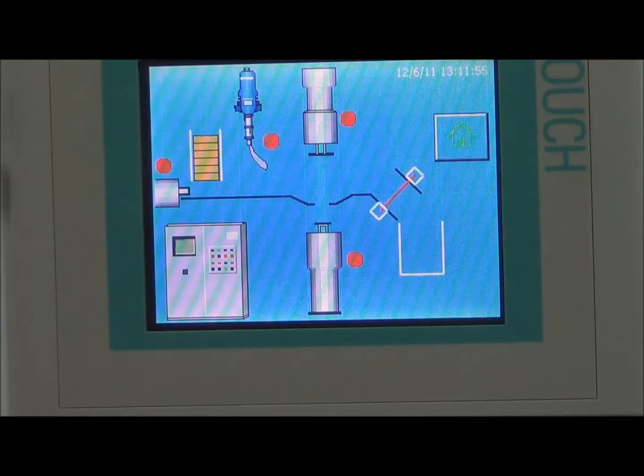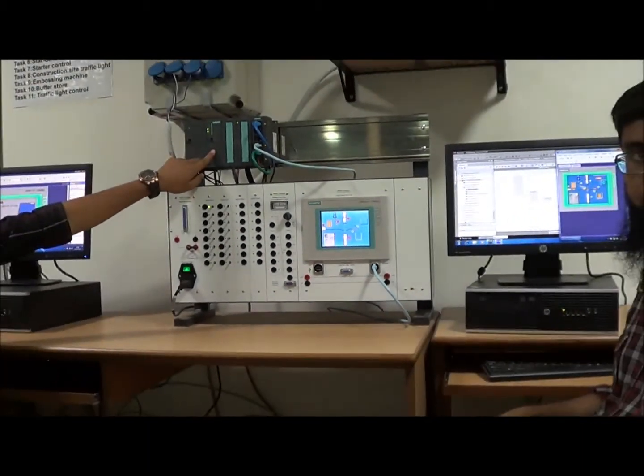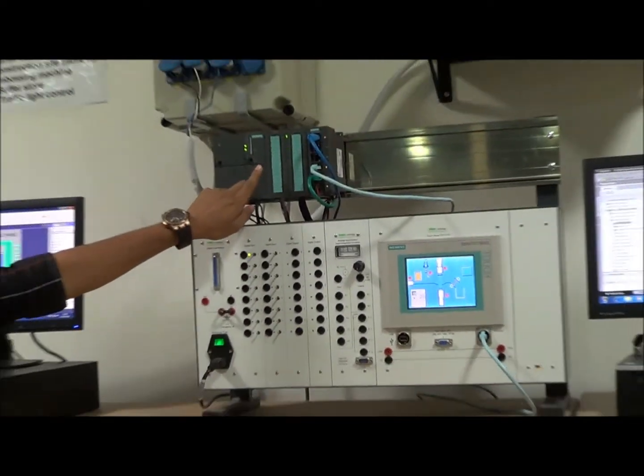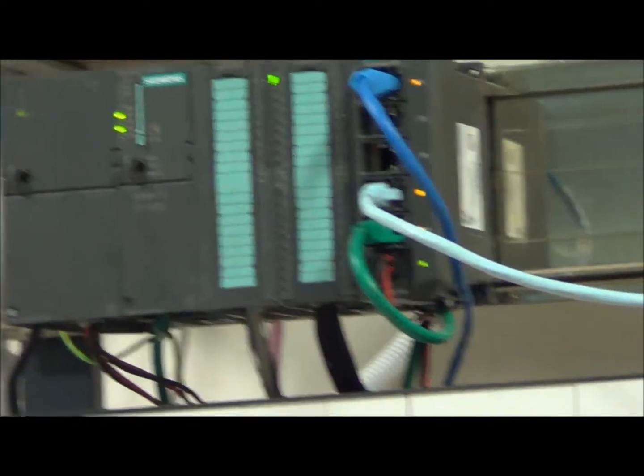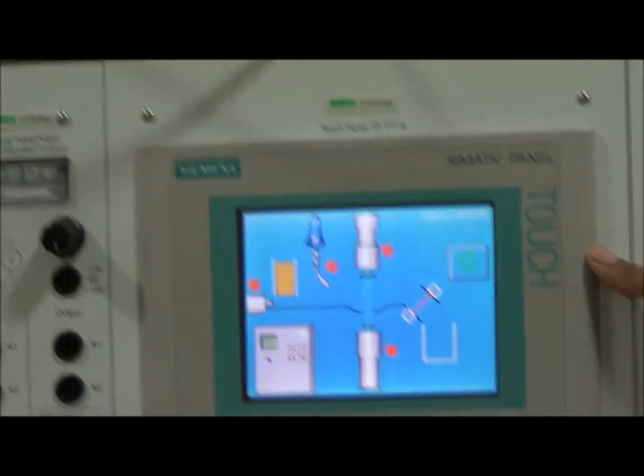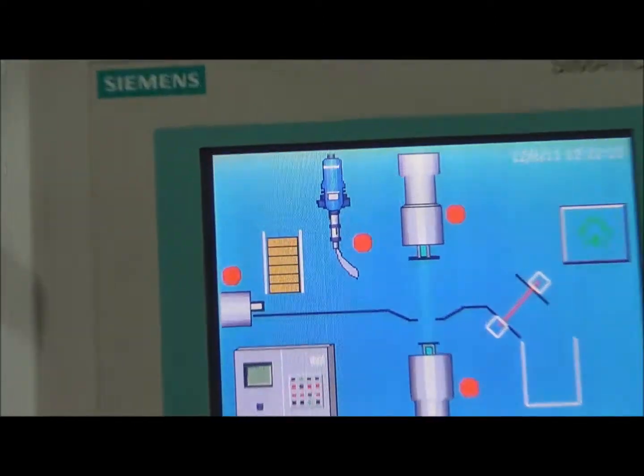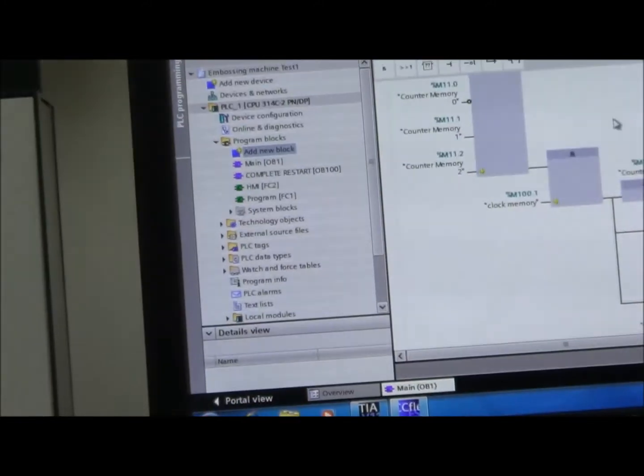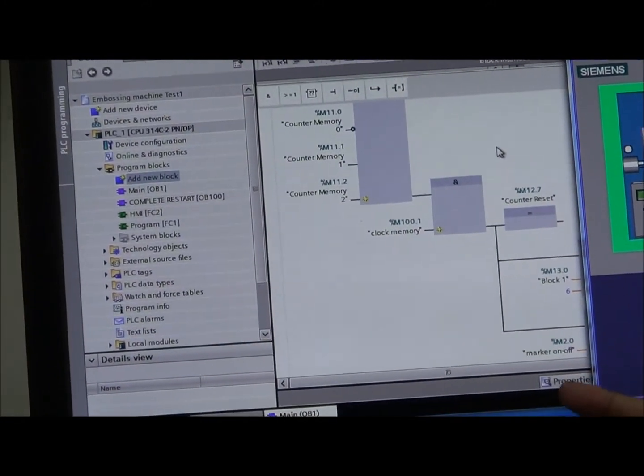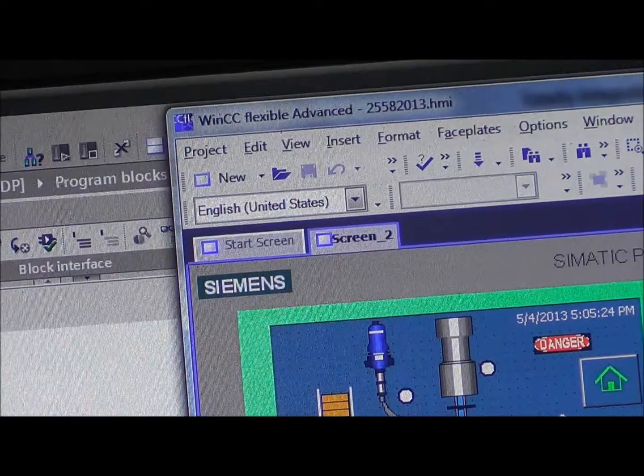This project was developed using the Siemens S7-200 series hardware and it was shown on the Siemens HMI touch panel. The programming logic was developed using functional block diagram on TIA Portal integrated automation software from Siemens. And the screen on the HMI was developed using WinCC Flexible Advanced software, as you can see here.